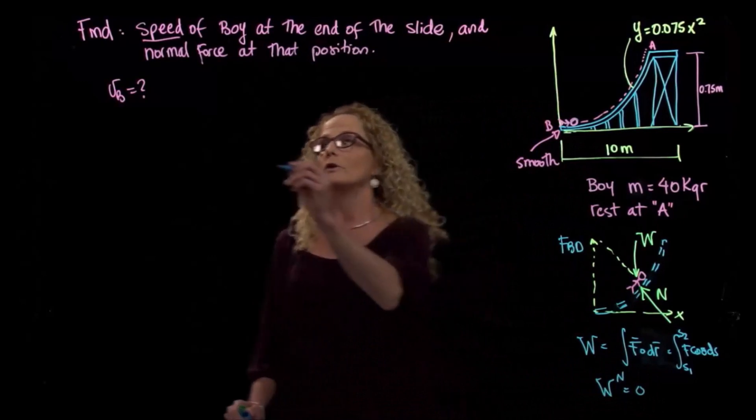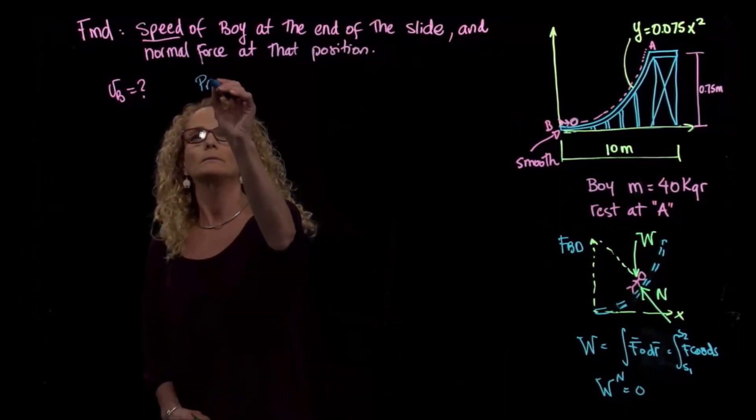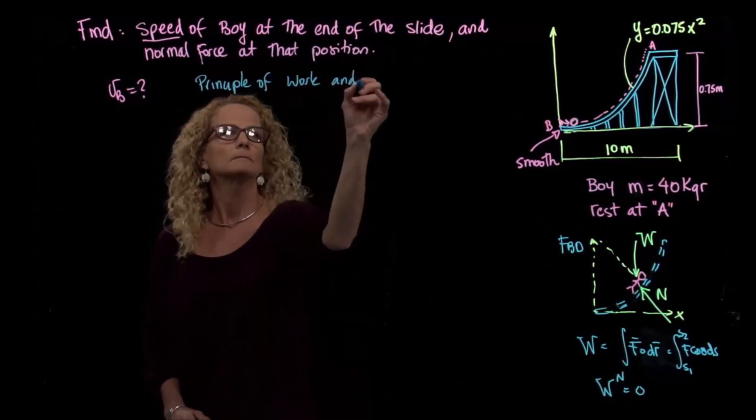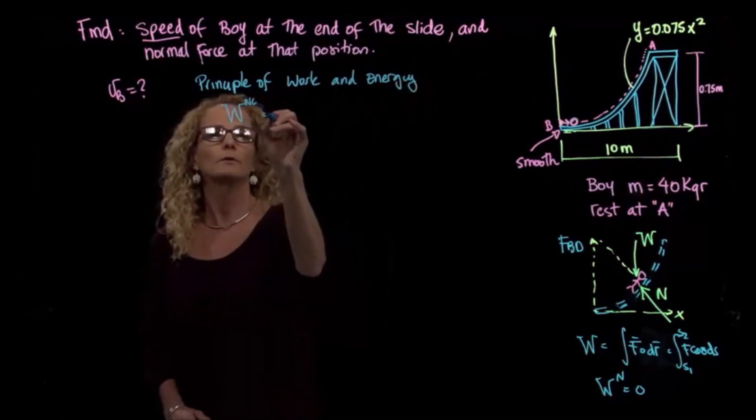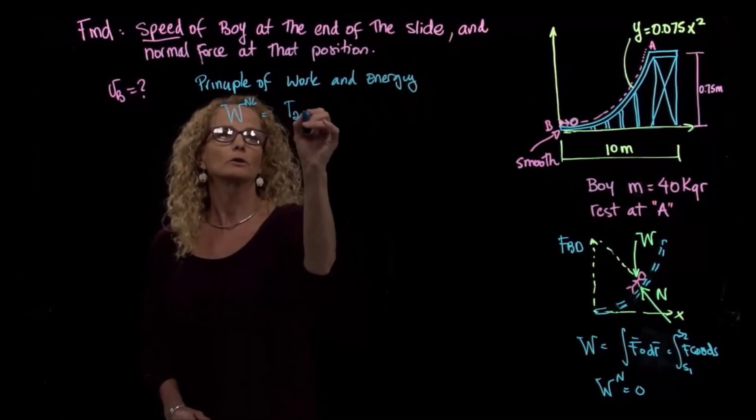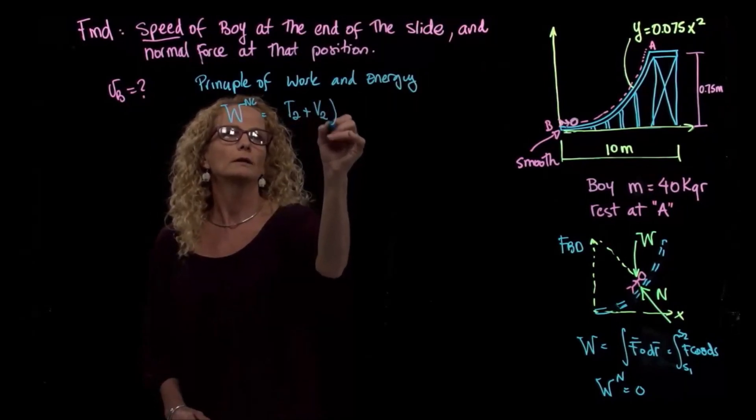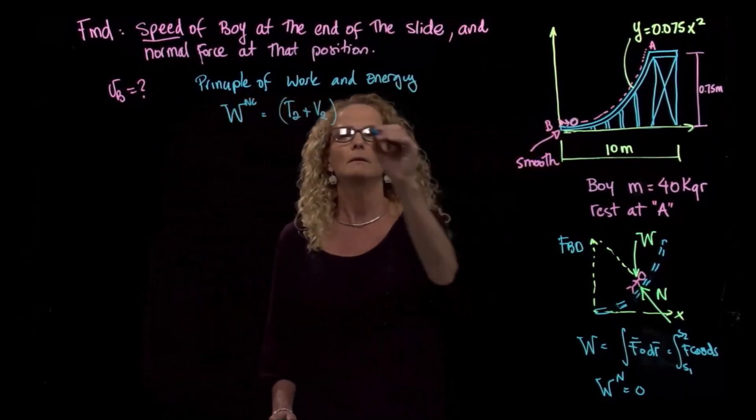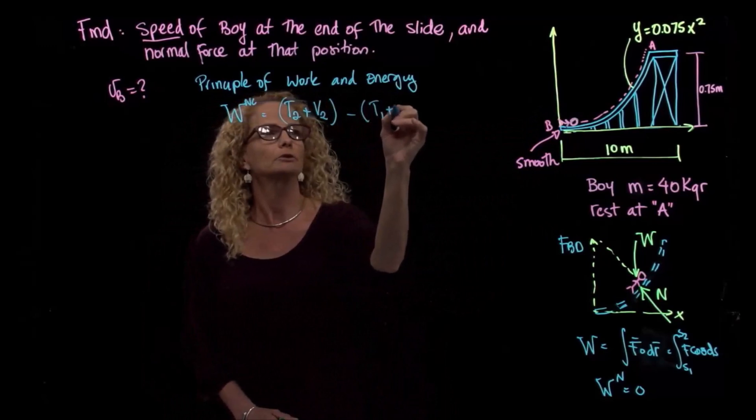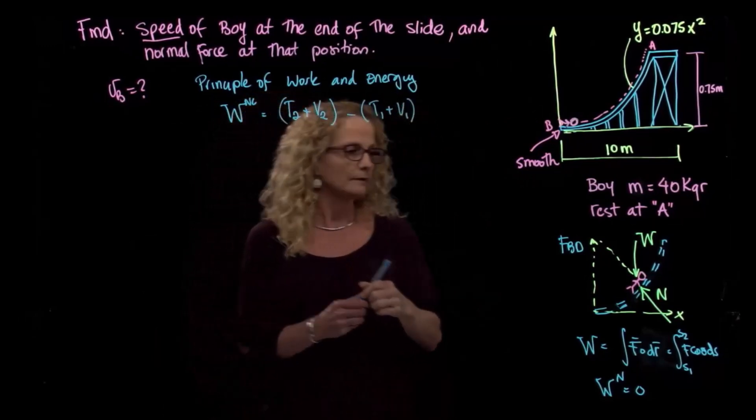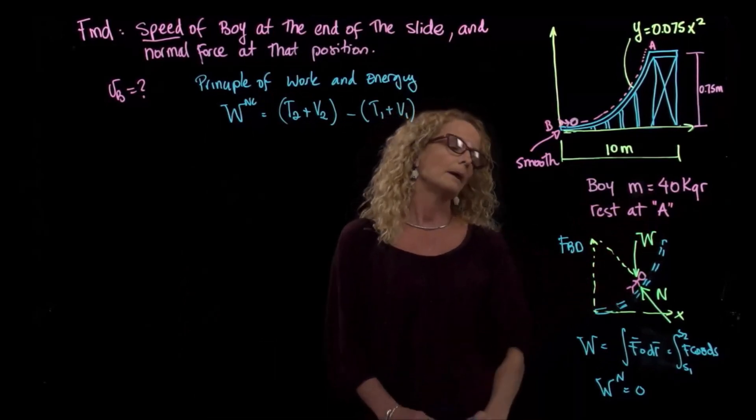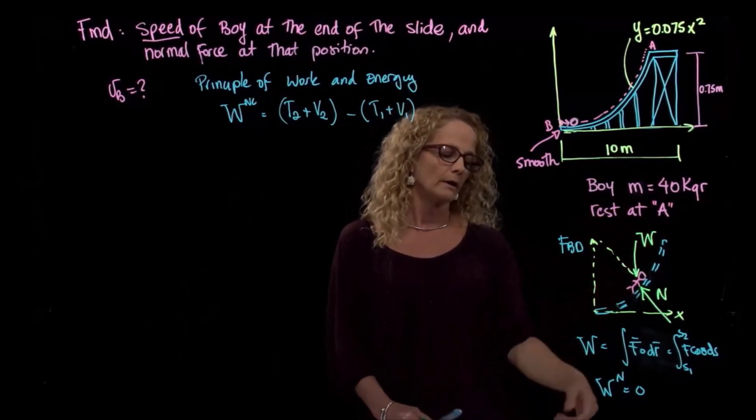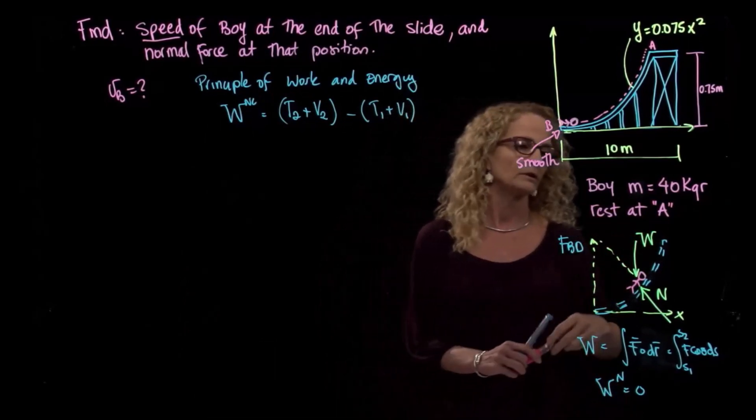So if we use our principle of work and energy, we can write that the work done by non-conservative forces is equal to the total energy in position two, in this case will be position B, minus the total energy in position one, right? And we see that here, the only force acting all along my trajectory is the weight. And the weight, I can say that is a conservative force.